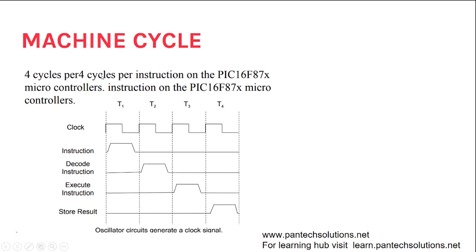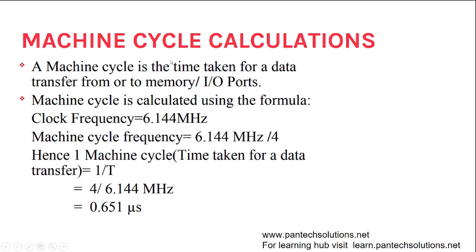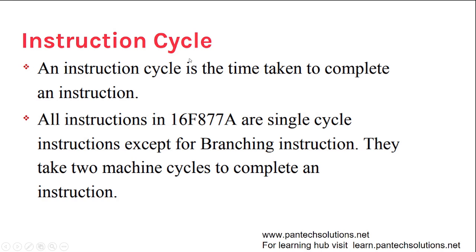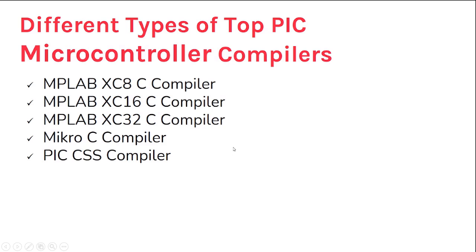On machine cycles: PIC has four clock cycles per instruction. The pipeline stages are: T1 — fetch the instruction, T2 — decode the instruction, T3 — execute the instruction, T4 — store the result. If the clock frequency is 6.144 MHz, one machine cycle equals 4 divided by 6.144 MHz = 0.651 microseconds. All instructions in PIC16F are single-cycle instructions except branching instructions, which take two machine cycles.